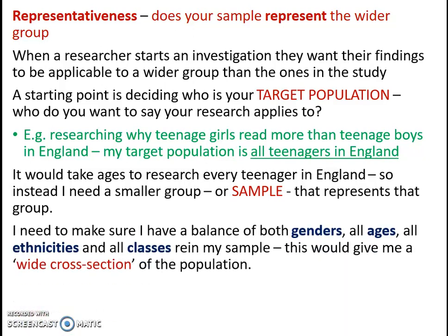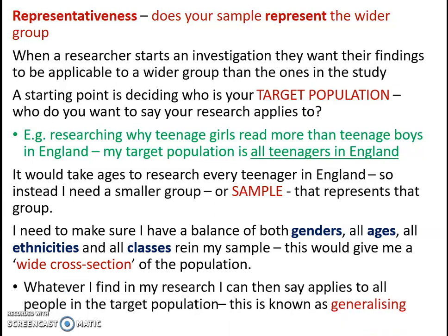In my sample I need to make sure I have a balance of both genders, all ages of teens represented, all ethnicities in the UK represented, and all classes represented — working, middle, and so on. This gives what's known as a wide cross-section of the population I want to research. That means I can then say that whatever I find — for example, that girls read more because their parents read to them more as young children — applies to all teenagers in England because my representative sample shows that pattern.